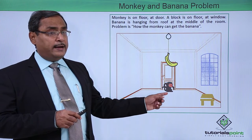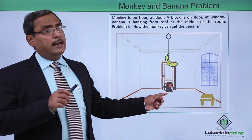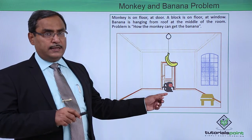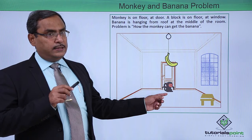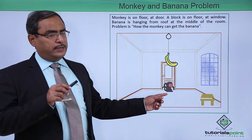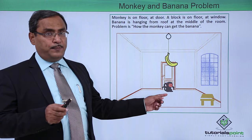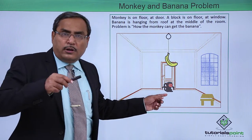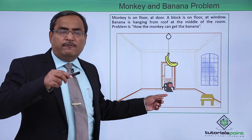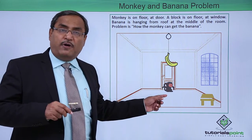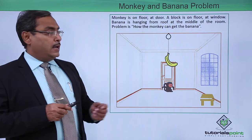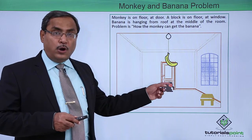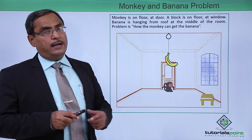Then the monkey can climb the block. The monkey can climb the block if the block and the monkey are at the same place. Now the monkey is at the middle of the room and the block is also at the middle of the room. Initially the monkey was on the floor, so when it climbs the block its vertical position changes — it will now be found on the block. When the block is at the middle and the monkey is on the block, then the monkey can grasp the banana.